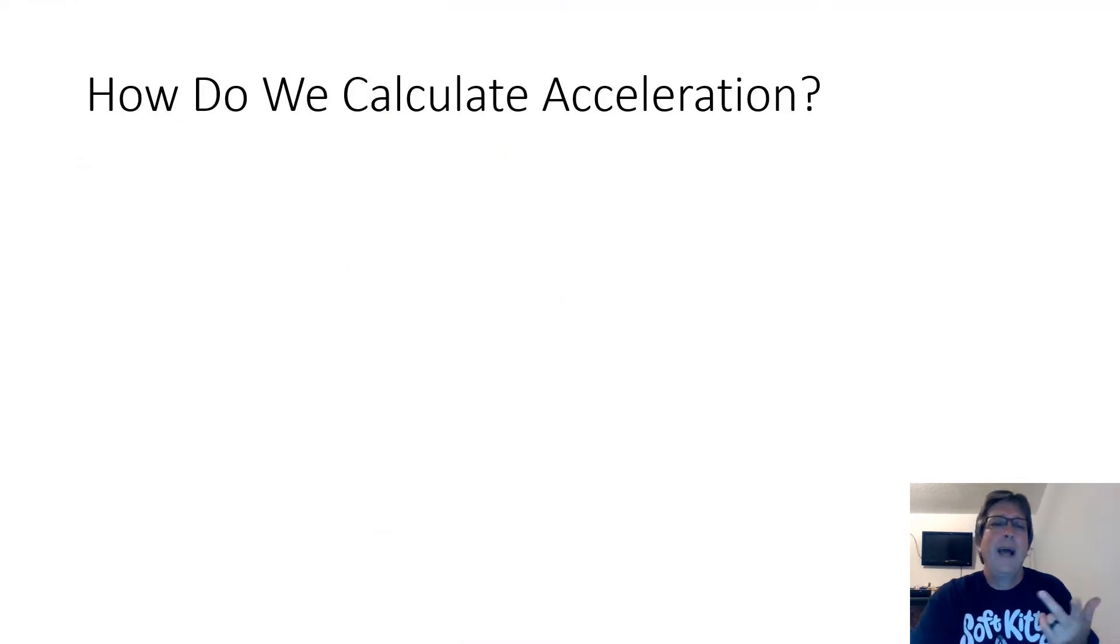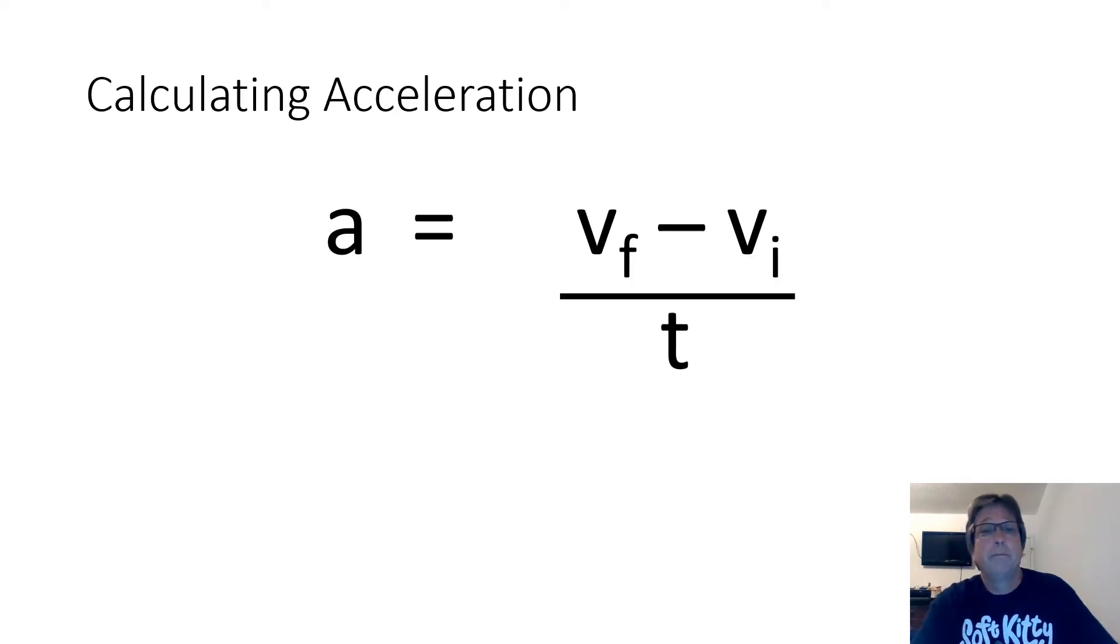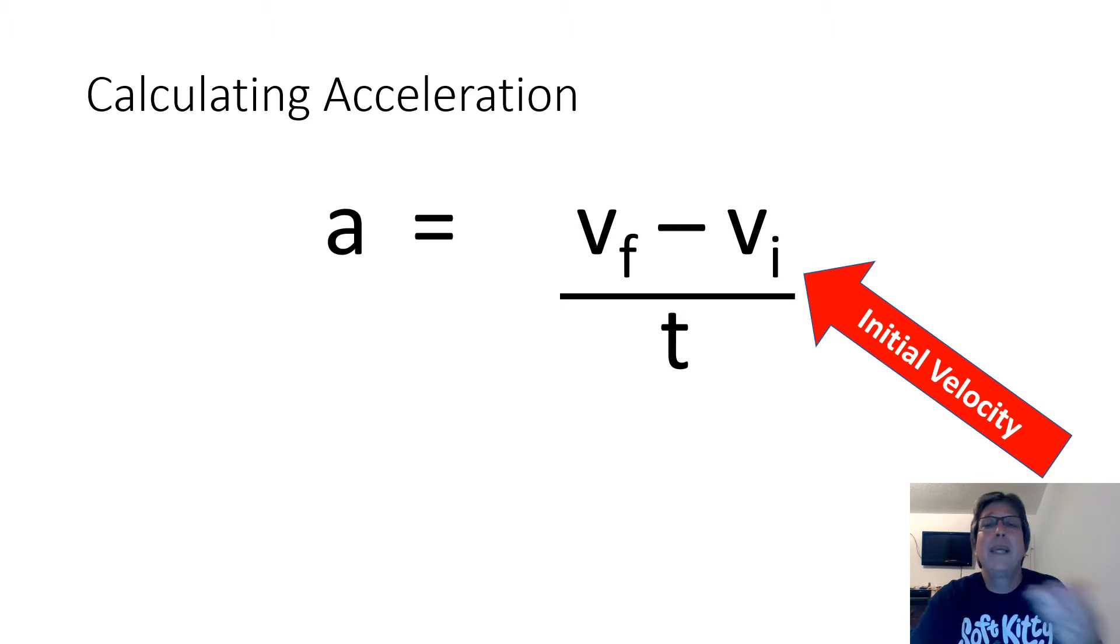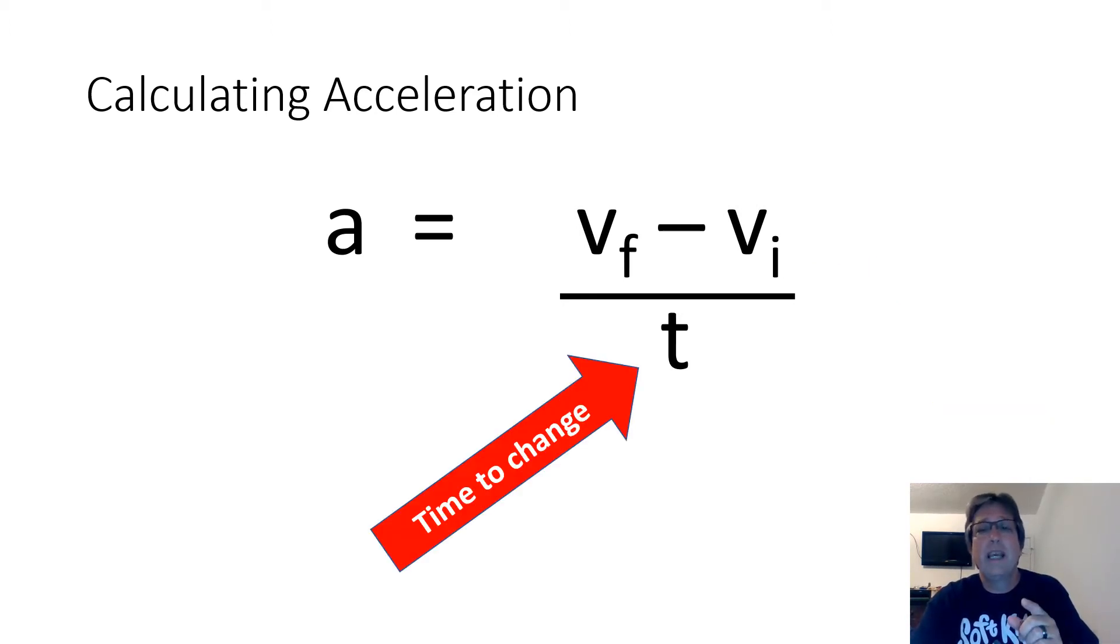So, how do we actually calculate acceleration? Well, we use a formula. And this is it. A equals V sub F minus V sub I divided by T. A, of course, stands for acceleration. The V with the F subscript stands for final velocity. That's the velocity something ends up going. The V sub I, on the other hand, stands for initial velocity. That's the velocity in the beginning. And then, of course, T is the time it takes to change the velocity.